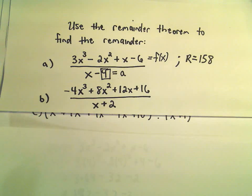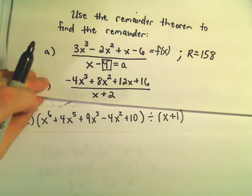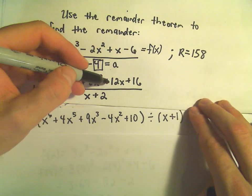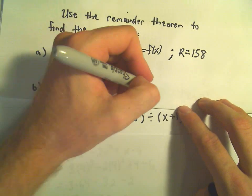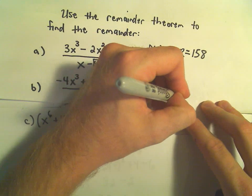Let's do one other one real quick. Notice we've got -4x³+8x²+12x+16. We're dividing by x+2. Notice we could write the denominator as x-(-2).